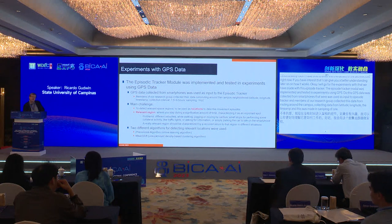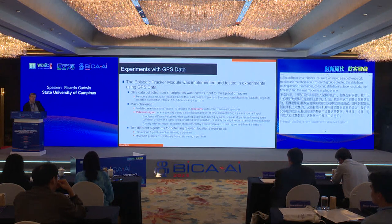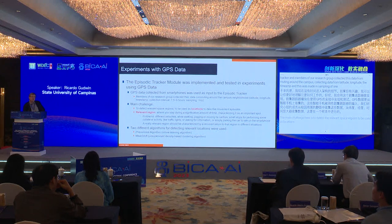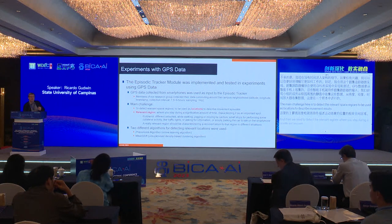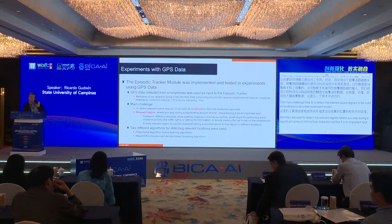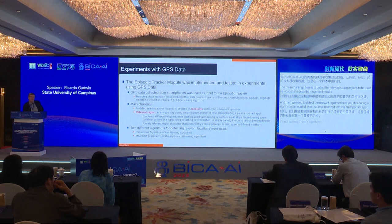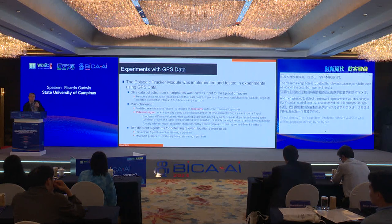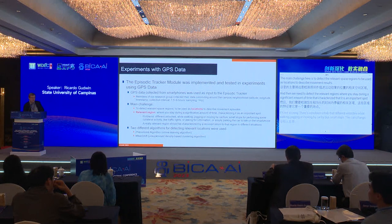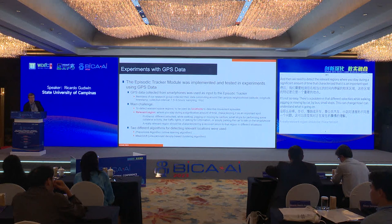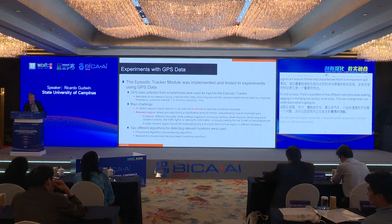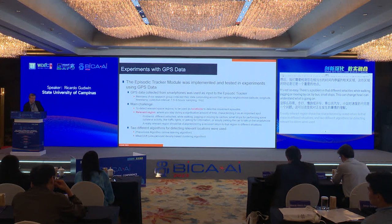The main challenge is to detect the relevant spatial regions to be used as locations to describe movement episodes — detecting where a subject stays during a significant amount of time that characterizes an important spot. Different velocities while walking, jogging, or moving by car or bus, and small stops, complicate understanding what is going on. A truly relevant region should be characterized by a recurring return to that region in different situations. Two algorithms for detecting relevant locations were used: the pheromone algorithm and the mean shift algorithm.